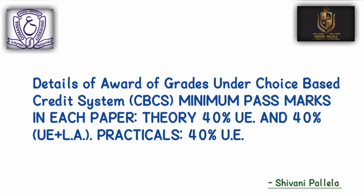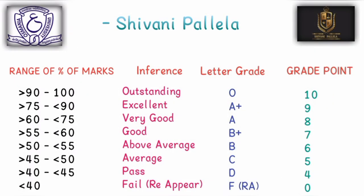The marks and grades are under the CBCS system. Minimum pass marks apply to each paper — 40% is required for theory papers, and 40% is required for practicals and internal examinations. The range of marks is the main important thing, because grades are assigned based on your total marks. In CBCS, the external exam carries 80 marks, and the remaining 20 marks are added by your college as internal marks.